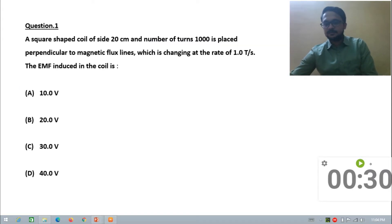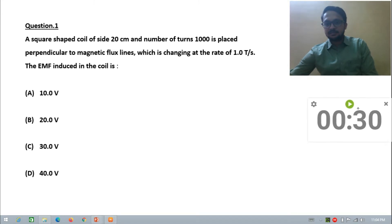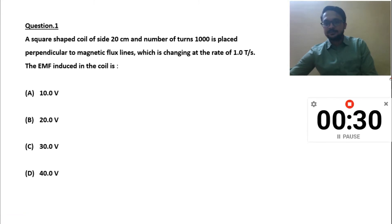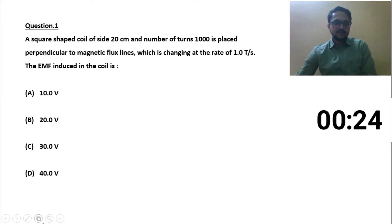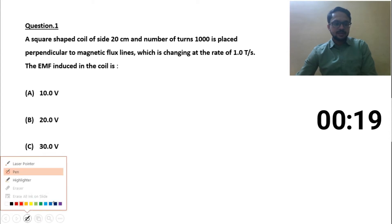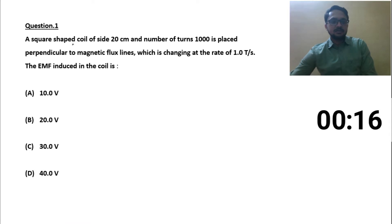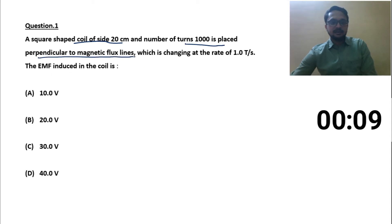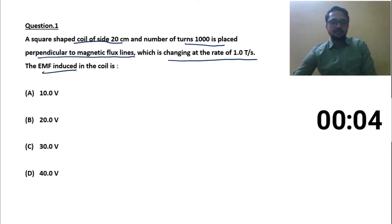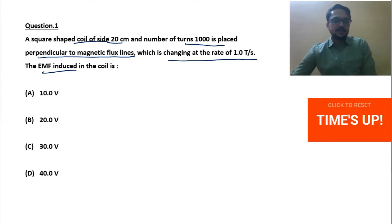This is our first question and your timer is just starting. Read the question first of all — your timer is going on. A square-shaped coil of side 20 centimeter, number of turns 1000, placed perpendicular to the magnetic flux lines which is changing at a rate of one tesla per second. Find the EMF induced. Time's up.